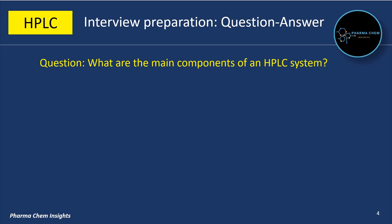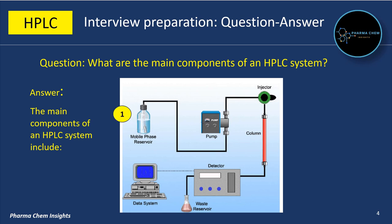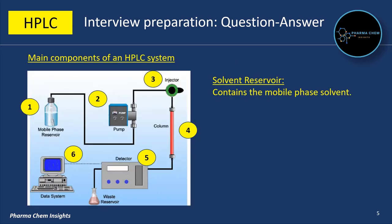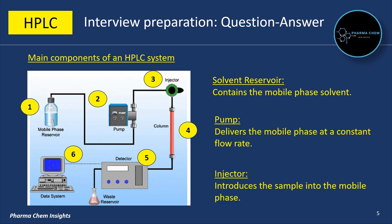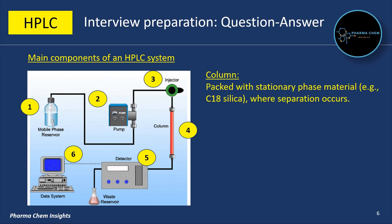Next question: what are the main components of an HPLC system? The main components include — as you can see in this diagram — mobile phase reservoir, pump, injector, column, detector, and data system. The solvent reservoir, also called the mobile phase reservoir, is a glass bottle that contains the mobile phase. The pump delivers the mobile phase at a constant flow rate. The injector introduces the sample into the mobile phase.